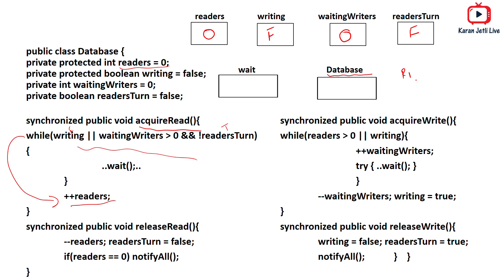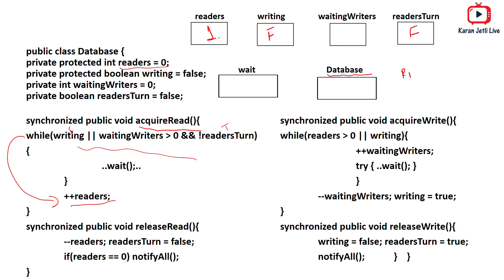So R1 increments the readers count to one and starts reading the database.